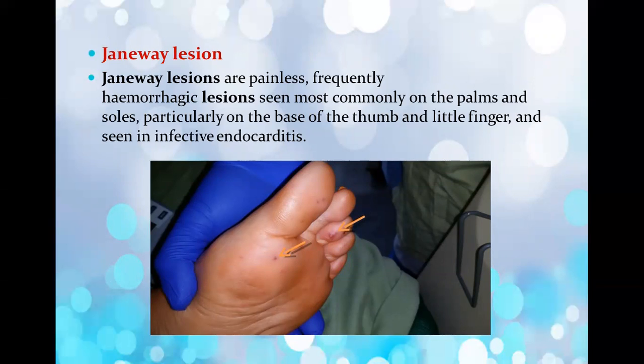The next question was an image-based question about Janeway lesions. Janeway lesions are seen in infective endocarditis. These lesions are painless, frequently hemorrhagic lesions seen most commonly on the palms and soles, particularly at the base of the thumb and little finger.